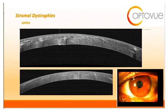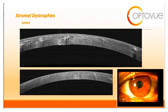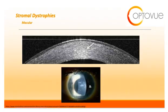Next is lattice dystrophy. Lattice appears clinically as refractile branching lines, white subepithelial dots, and can lead to eventual scarring of the corneal stroma centrally. On OCT, you can clearly see the linear hyper-reflective lines correlating with this dystrophy.